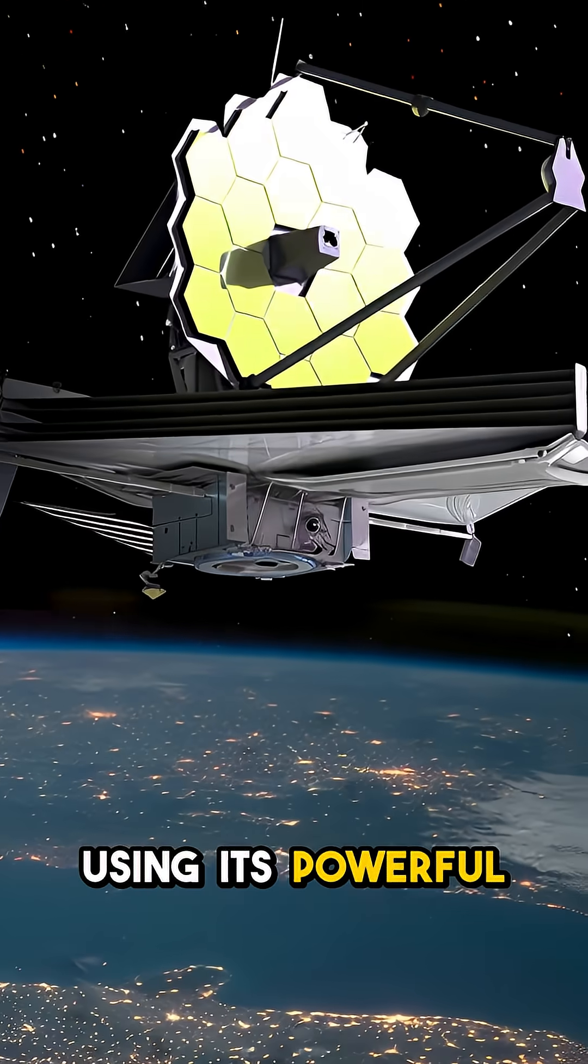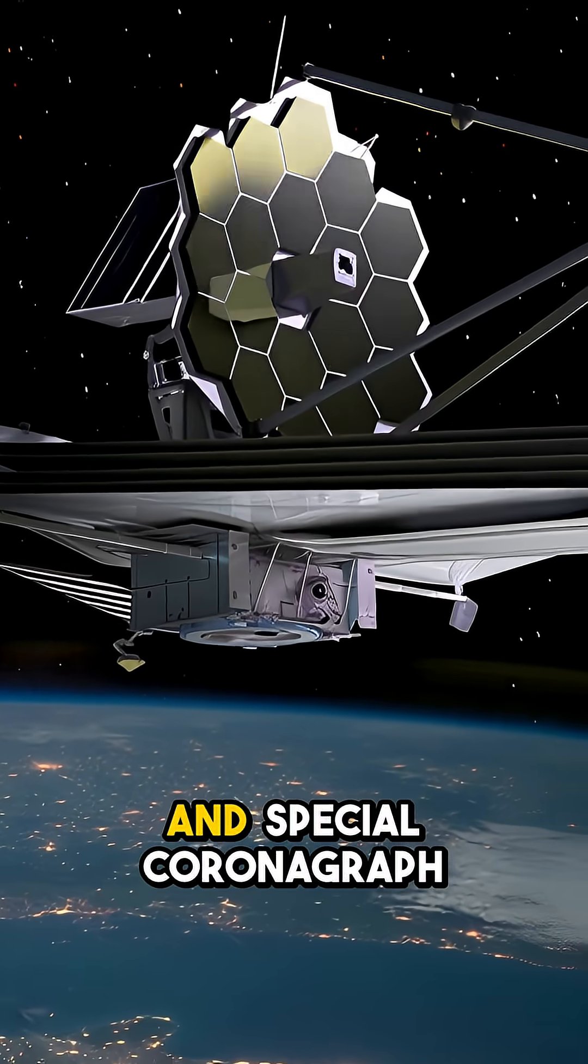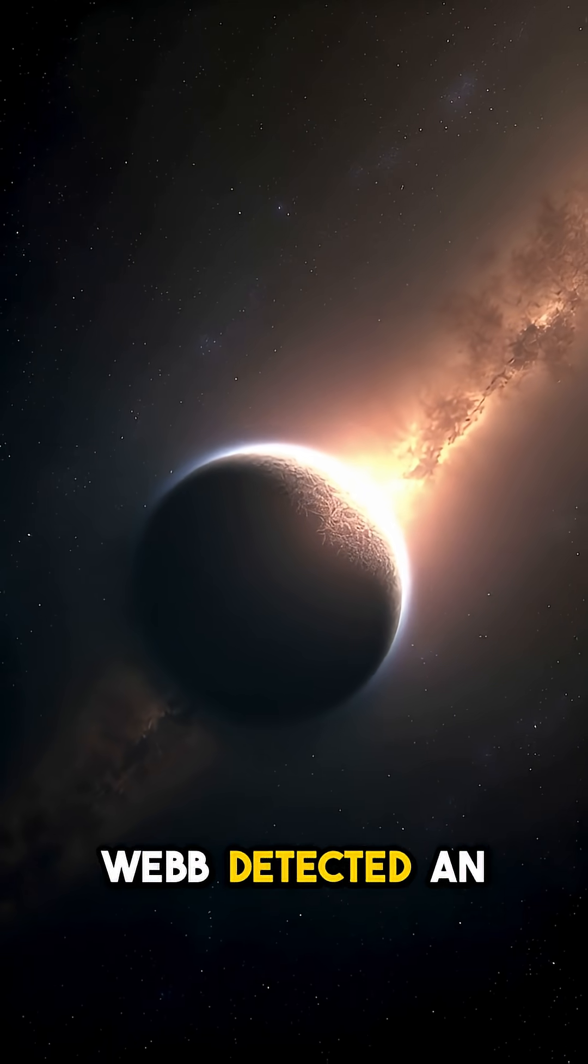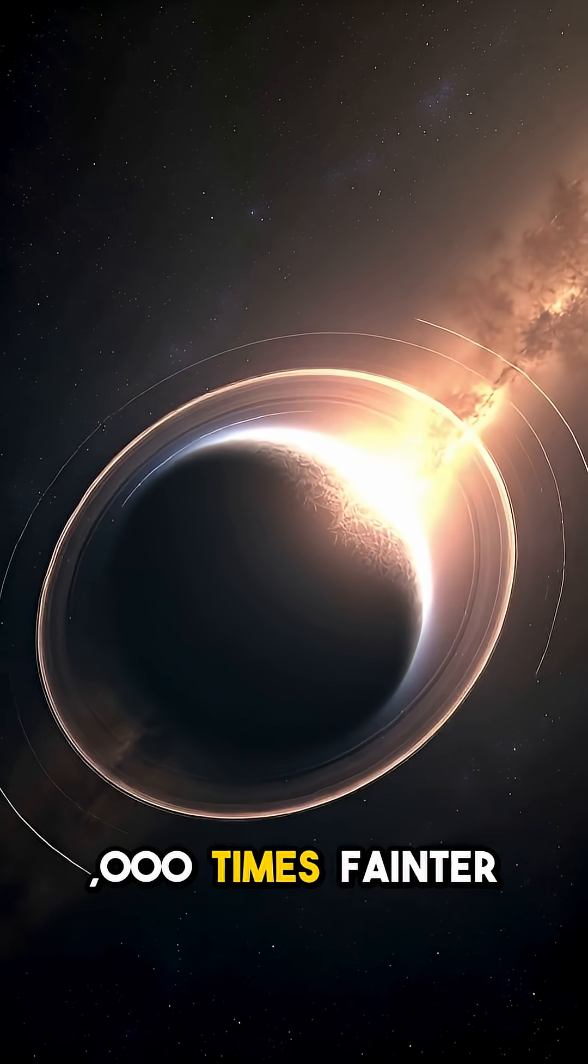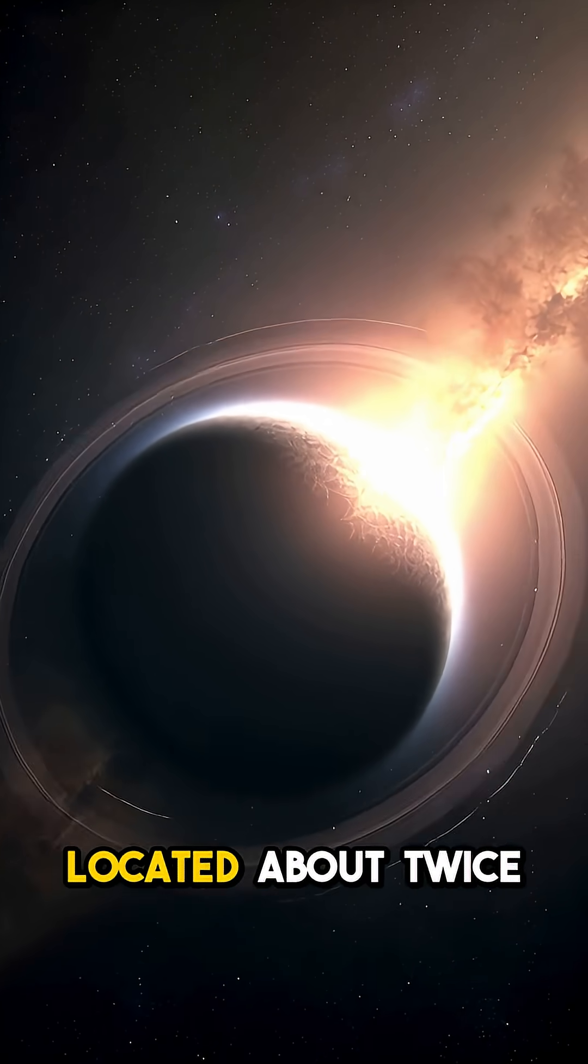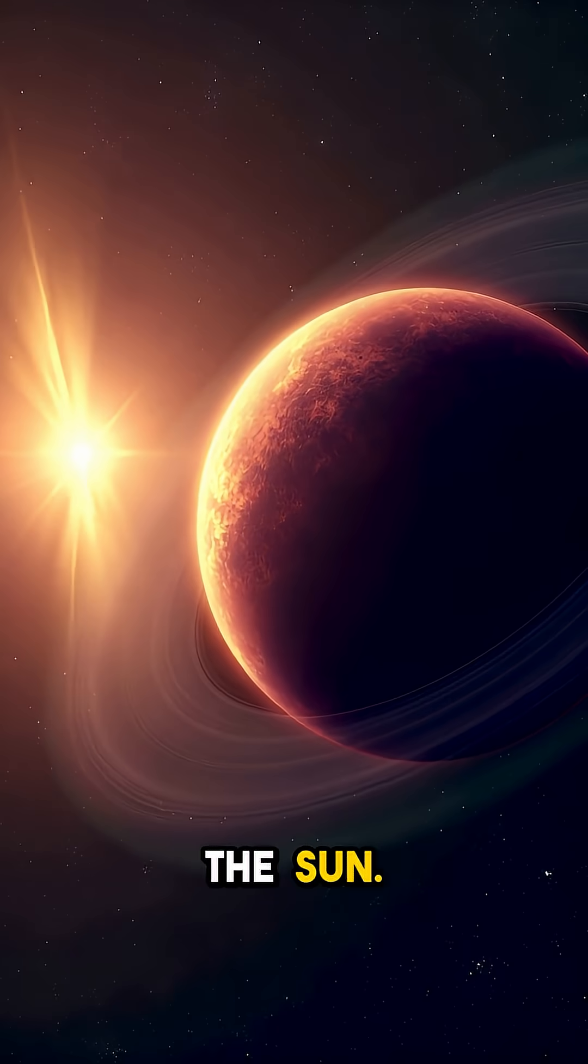Using its powerful mid-infrared instrument and special coronagraph technology, Webb detected an object over 10,000 times fainter than the star, located about twice Earth's distance from the Sun.